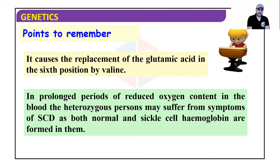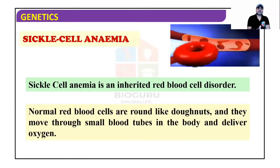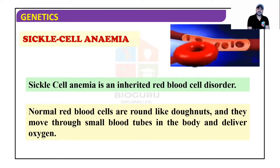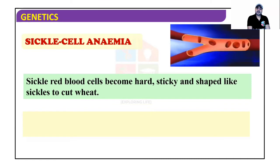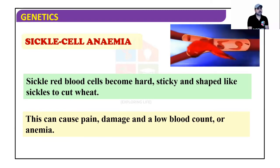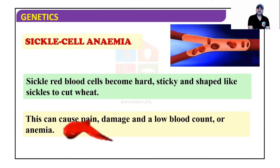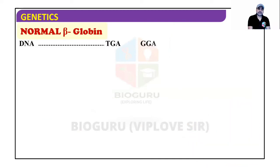Sickle cell anemia is an inherited red blood cell disorder that can be transferred from one generation to the next. Normal red blood cells are round like doughnuts and deliver oxygen through small blood vessels. Sickle red blood cells become hard, sticky, and shaped like a sickle used to cut wheat — this rigidity and stickiness causes them to clump and clog blood vessels.